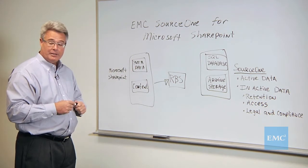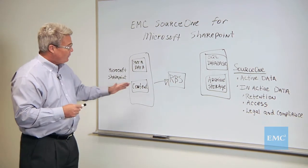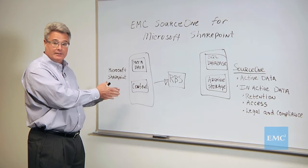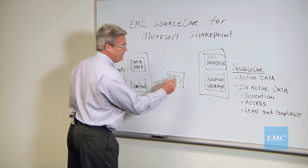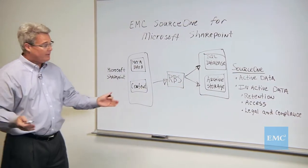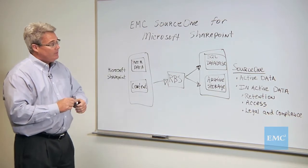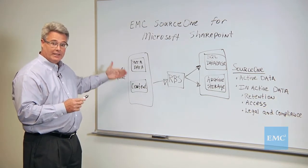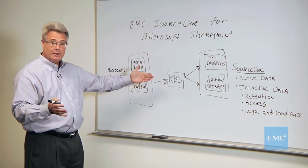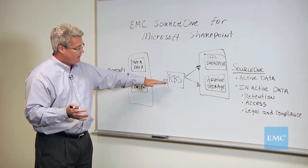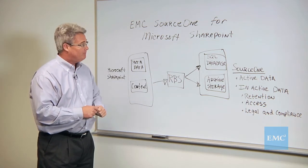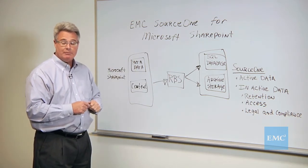Using this API that Microsoft has provided with SharePoint, we can pull out the content body — say the Word file — and leave behind what looks like it's still there. The user can't tell. We track the data with some metadata and store that piece of content, say the Word doc, into the archive storage. So addressing the needs of active data and storage growth, SourceOne performs its first task, which is around storage management — moving this content using the RBS API to another lower-cost tier of storage. That's part one of the SourceOne job for Microsoft SharePoint.